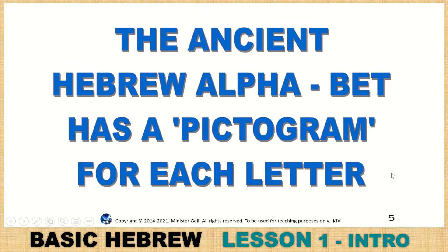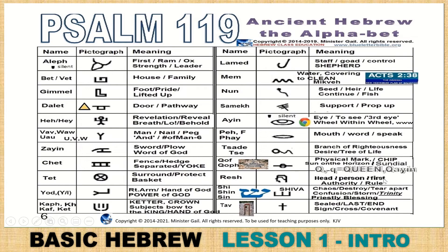The ancient Hebrew alphabet has a pictogram for each letter. Adam named the animals, so he had to have an alphabet. This is the ancient pictogram which is in Psalm 119 — these are the ancient pictures that go with each of the 22 letters. The ox head picture is written as a marker, silent, for Aleph. The PH can be a PH or an F — either way is correct.